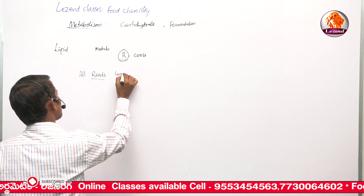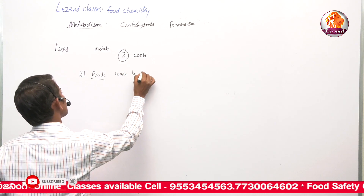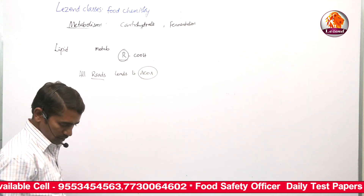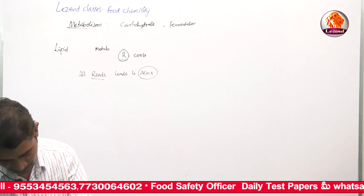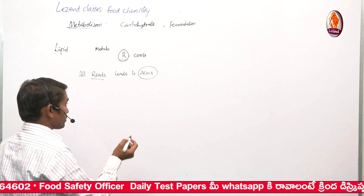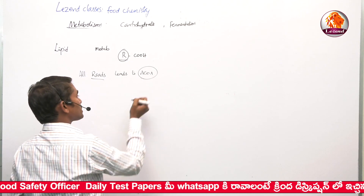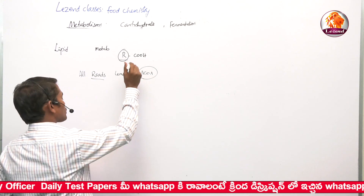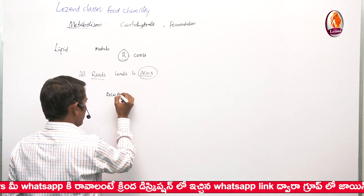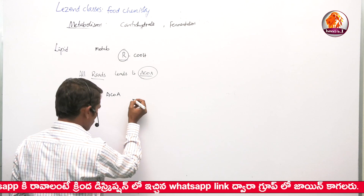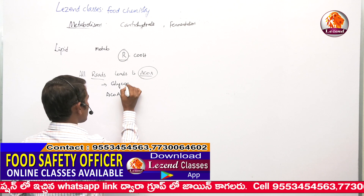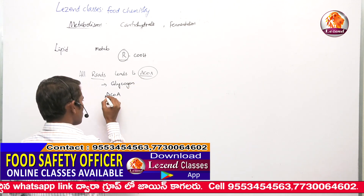In biochemistry, 'all roads lead to acetyl-CoA' means: carbohydrate ultimately gets converted into acetyl-CoA, lipid also enters as acetyl-CoA, and even amino acids, by undergoing deamination and transamination, become pyruvate, and pyruvate again becomes acetyl-CoA. When an individual has sufficient energy, extra glucose gets converted into glycogen.